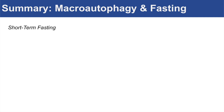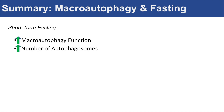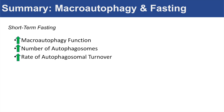All of these effects increase the amount of mature autophagosomes and autolysosomes to increase macroautophagy functioning. In summary, during short-term fasting — about four hours — macroautophagy function is increased, leading to an increase in the number of autophagosomes and autolysosomes and an increase in the rate of autophagosomal turnover.